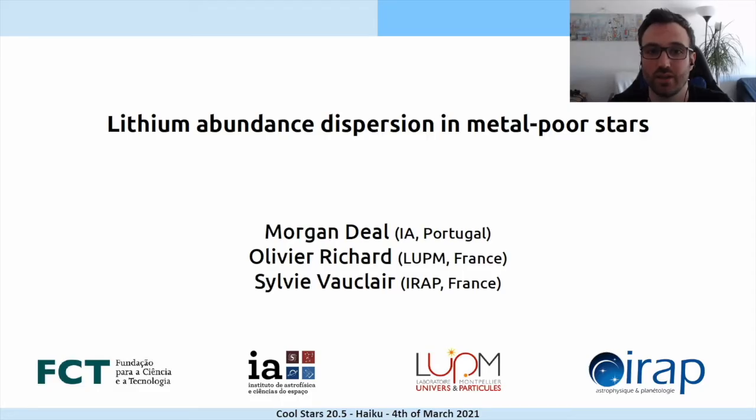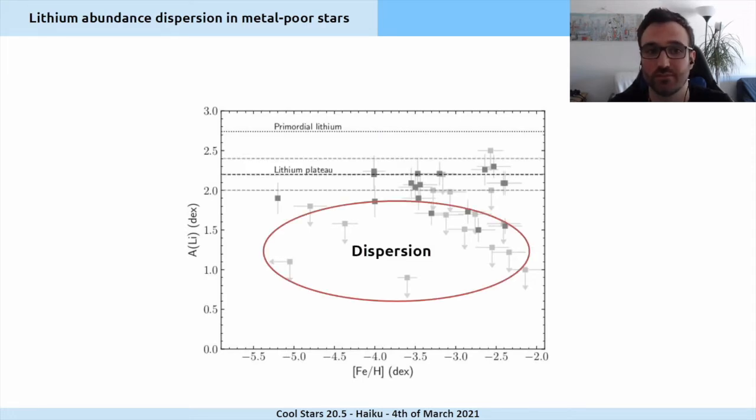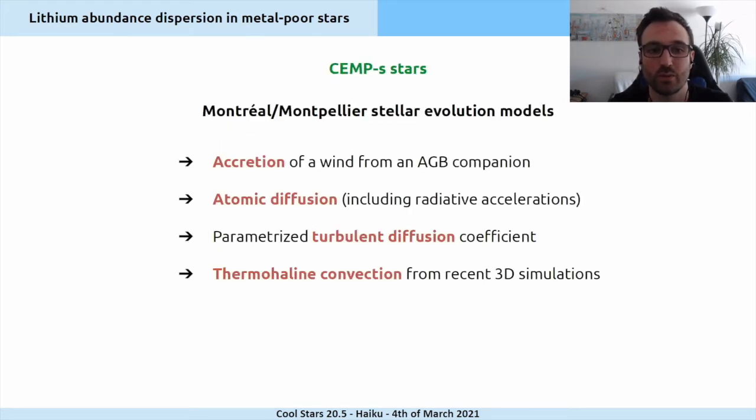Hello everybody, I'm Morgan Dehal. I would like to present our recent work on lithium abundance dispersion in metal-poor stars. Many Population II stars show similar lithium abundance, the so-called lithium plateau, but many metal-poor stars also present a large scatter. In this work, we focused on carbon-enhanced metal-poor stars. These stars are believed to be formed by the accretion of the wind of a companion going through the AGB phase.